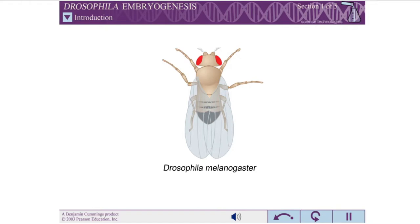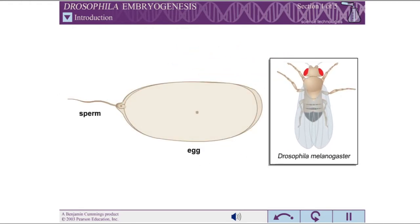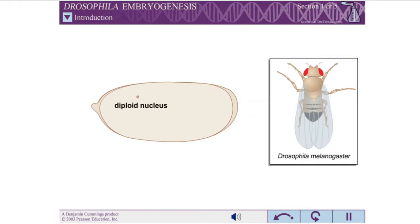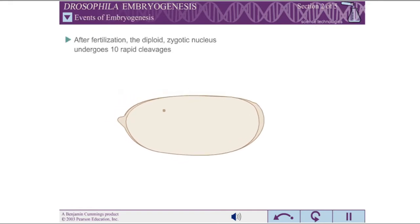The fruit fly Drosophila melanogaster has been studied extensively as a relatively simple model for cell differentiation in animals. During fertilization, a single sperm cell enters a mature egg and the haploid sperm and egg nuclei fuse to form a diploid nucleus. Only a few hours after fertilization, the cells of a developing fruit fly embryo become irreversibly determined to differentiate into specific tissues in the adult fly. When you have completed this exercise, you should understand the events of Drosophila embryogenesis and how the position of each nucleus determines its fate in the developing fruit fly.